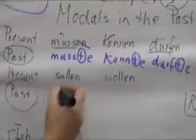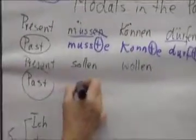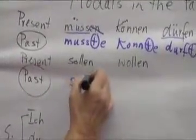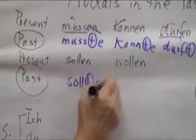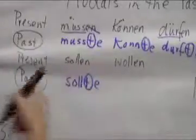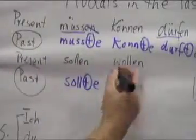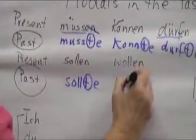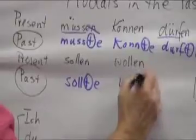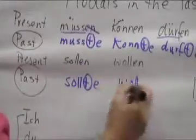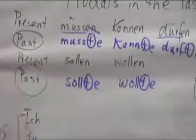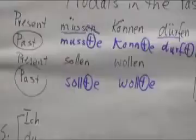Down here I'll give you a conjugation. Sollen — that's the easy one because we had no change. We just add the t and the personal endings, so it becomes sollte. Wollen: stem, add a t, and a personal ending.